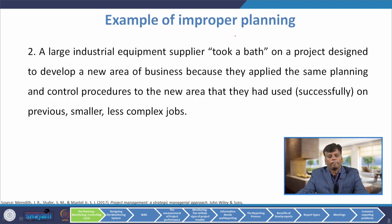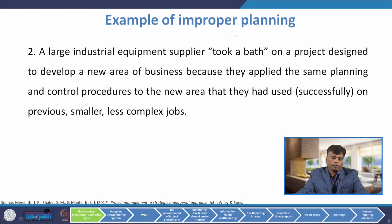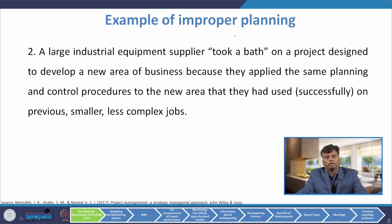A major construction project ran over budget by 63% and over schedule by 48% because the project manager decided he had managed similar projects before and knew what to do without going into all the details. This is the outcome of improper planning. A large industrial equipment supplier made a loss on a project because they applied the same planning and controlling procedures to a new area that they had used on previous smaller, less complex jobs. Things which have worked for one project may not work for another.